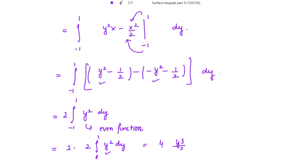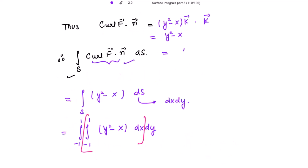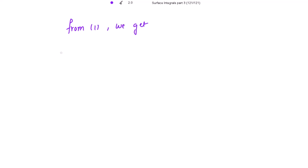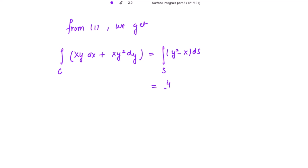Evaluating: y³/3 with limits from 0 to 1 gives 4 times (1/3 - 0) = 4/3. So the surface integral equals 4/3. Putting this value back using Stokes' theorem, the line integral over C of (xy dx + xy² dy) equals the surface integral of (y² - x) dS, which equals 4/3. The final answer is 4/3.